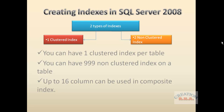There is only one clustered index because the table is sorted on that index — the table is arranged by that clustered index. A clustered index means your data will always use the clustered index whenever you query, because it is mostly associated with the primary key.